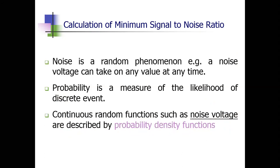We have two important terms: PFA and PD, which we saw in previous videos. PFA is the probability of false alarm and PD is the probability of detection. In the first video on prediction of range performance, I explained the importance of these two terms. Today we are going to find the expressions for PFA and PD.